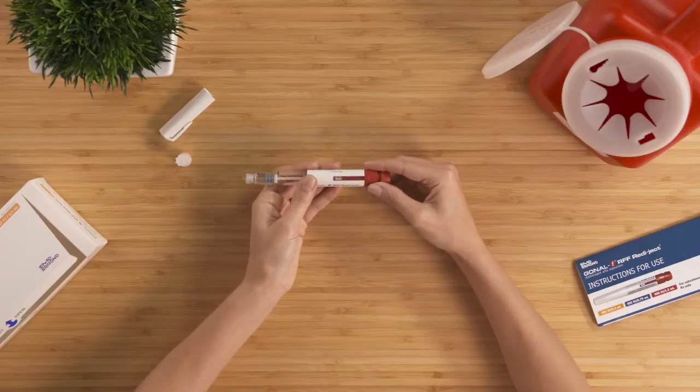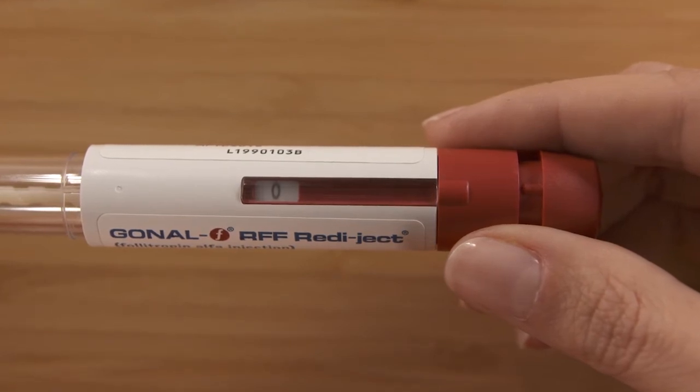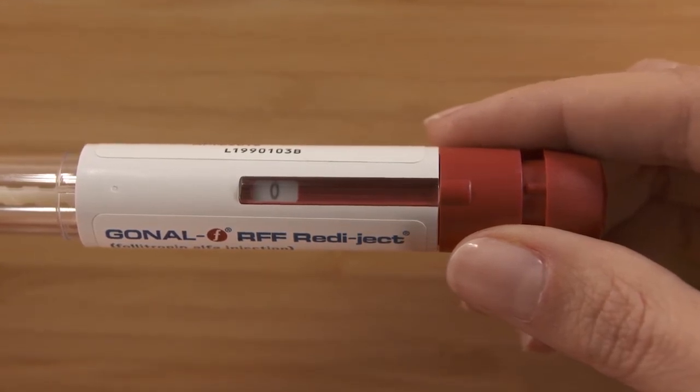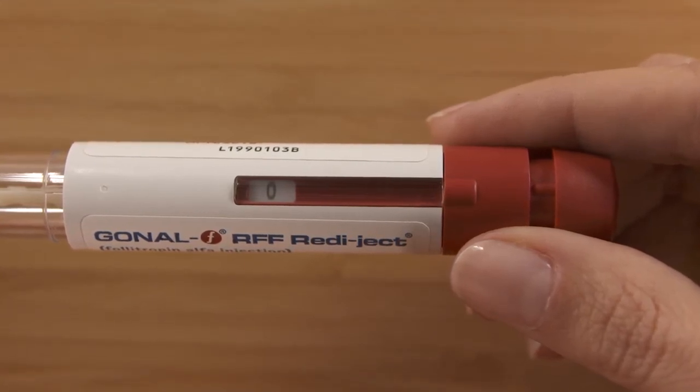Let's see how we did. See how it reads zero? We've completed the dose. If for any reason your pen does not show zero, you will need to use a second pen to inject the number shown in the dose information display to complete your dose.